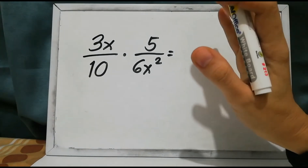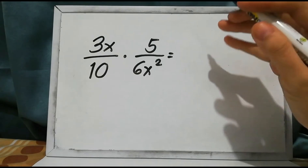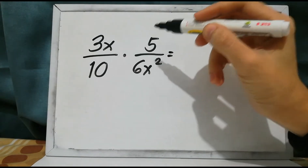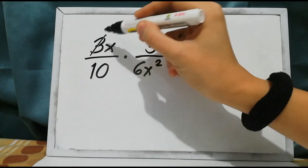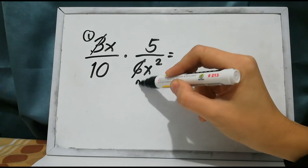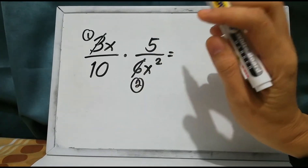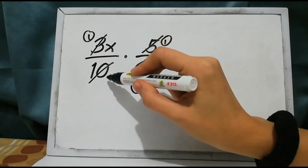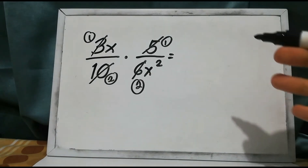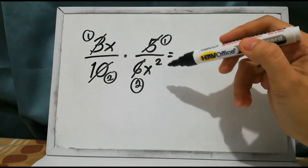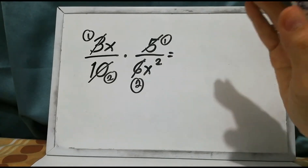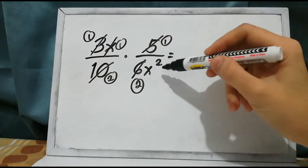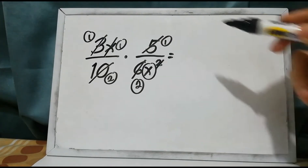The first thing you have to do is look for the greatest common factor. We have 3 and 6 — their common factor is 3. So 3 divided by 3 is 1, and 6 divided by 3 is 2. Also, 5 and 10 have a common factor of 5: 5 divided by 5 is 1, and 10 divided by 5 is 2. Now for the variables, we have x in the numerator and x squared in the denominator. x is the common factor: x divided by x is 1, and x squared divided by x gives you x.